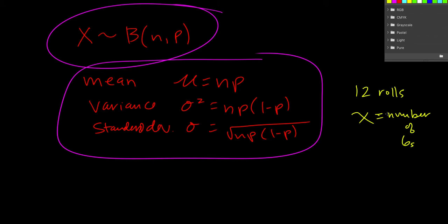So essentially our n is 12, because that's the number of times we rolled the dice. Our probability of getting any one outcome is 1 sixth, because it's a standard six-sided dice. And so we would write our binomial distribution like this.